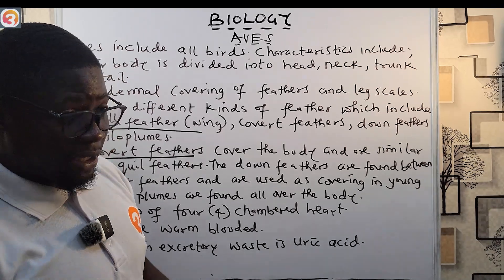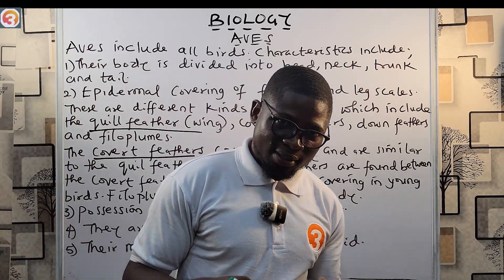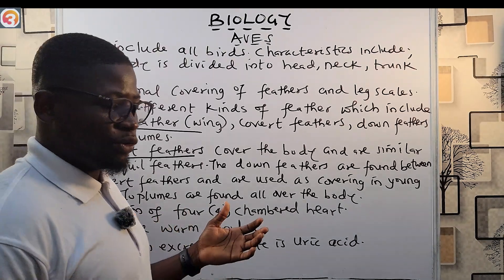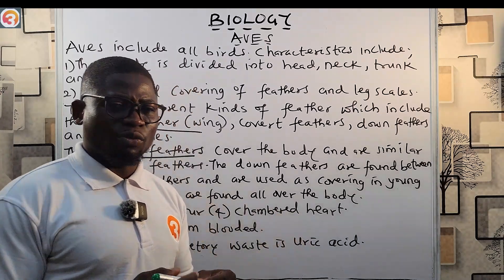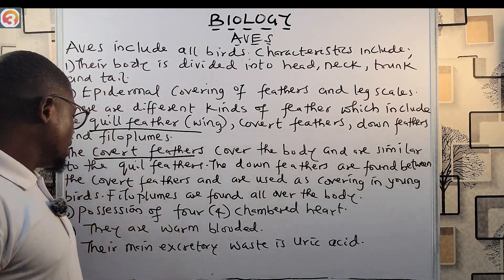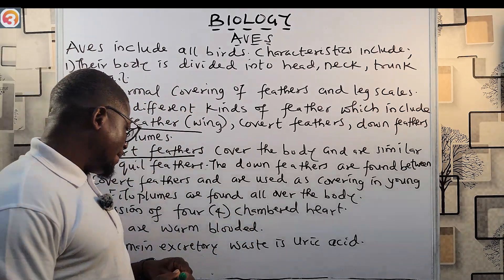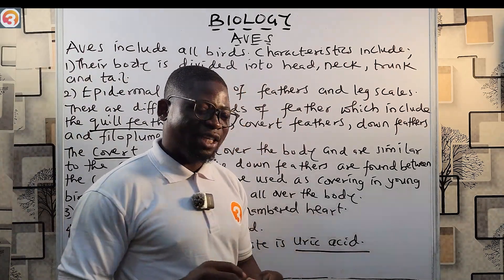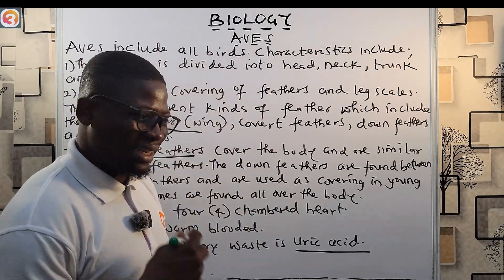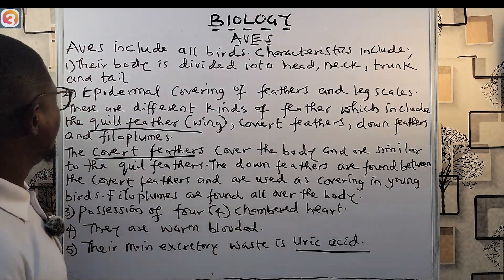Birds possess four-chambered hearts. They are warm-blooded because they can generate their own heat — they are endothermic. The feathers also help to prevent heat loss. Their main excretory waste is uric acid, which is a nitrogenous waste that is not needed in the body and must be excreted out.